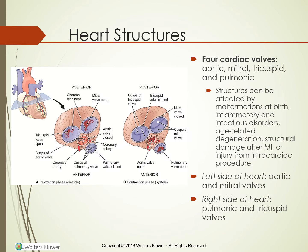There are 4 cardiac valves: aortic, mitral, tricuspid, and pulmonic. Structures can be affected by malformations at birth, inflammatory and infectious disorders, age-related degeneration, structural damage after an MI, or injury from intracardiac procedures. The left side of the heart contains the aortic and mitral valves; the right side contains the pulmonic and tricuspid valves. The left side of the heart has higher pressure than the right side.